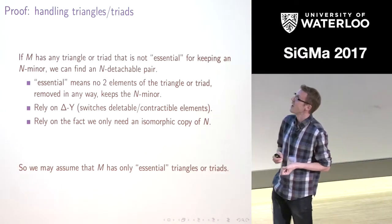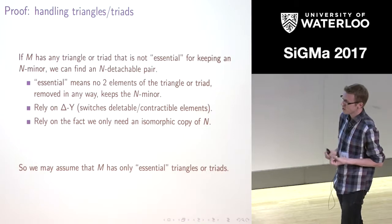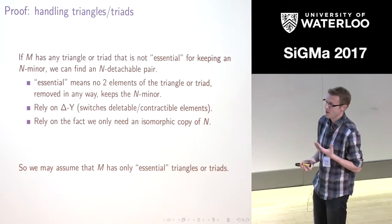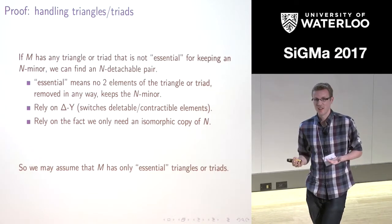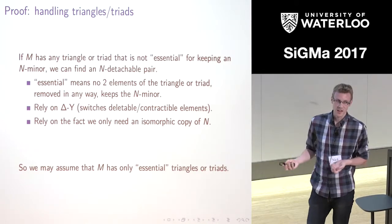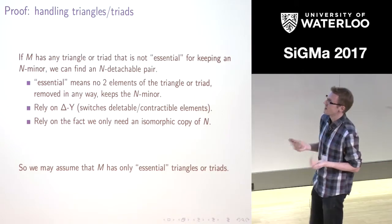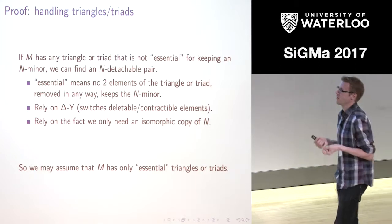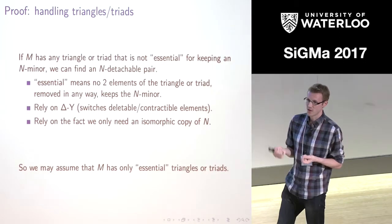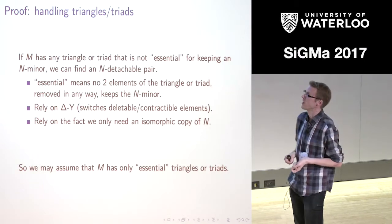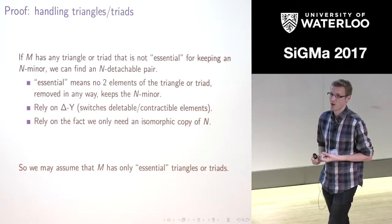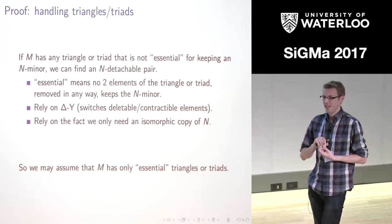Let me say a little about the proof. We delta-Y when we can, which allows us to deal with triangles and triads easily from the outset. Provided a triangle or triad isn't essential for keeping your minor N, you can perform a delta-Y or Y-delta as needed to find some elements that allow you to keep your connectivity and your minor — you have freedom because you're turning what would be deletable elements into contractable elements during the delta-Y. We also really require the fact that we're only keeping an isomorphic copy of N, and we use this a lot in the proof.